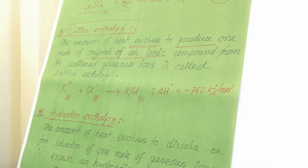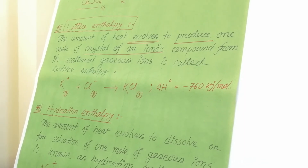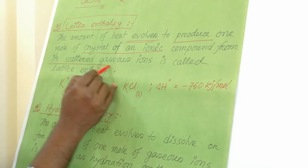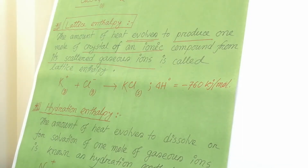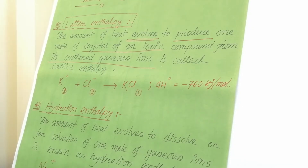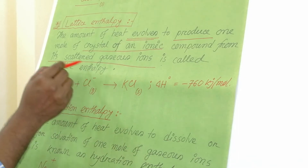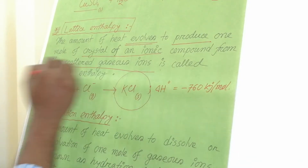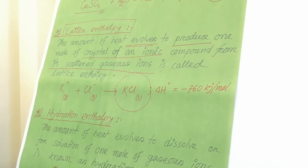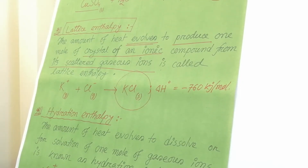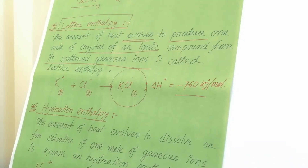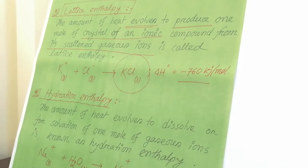The amount of heat evolved to produce one mole of crystal of an ionic compound from its scattered gaseous ions is called lattice enthalpy. For example, the lattice enthalpy of potassium chloride is minus 760 kJ per mole.